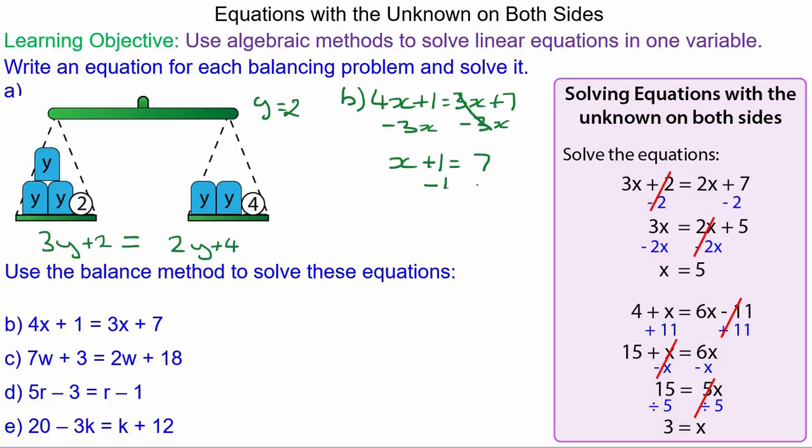So we take away 1 from both sides. 1 take away 1 is 0, so x will equal 6.